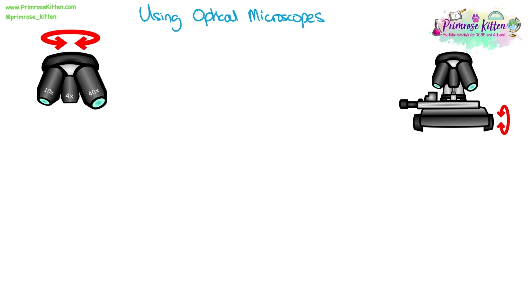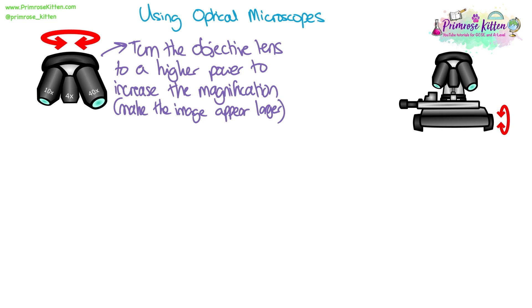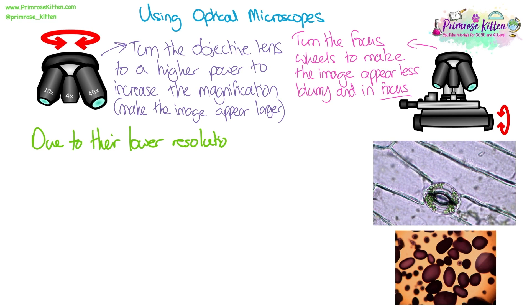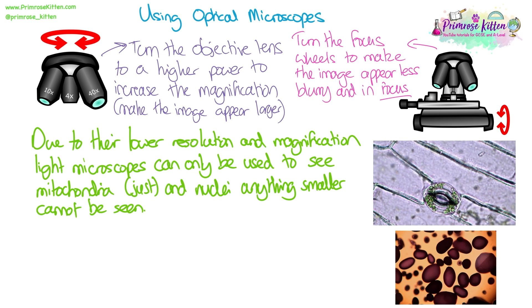When using optical microscopes, we need to make sure we're using the correct language. The way we increase the magnification is to turn the objective lens to a higher power — to make the image we see through the microscope appear larger. The focus wheels are used to make the image appear less blurry, to bring it into focus. Due to their lower resolution and magnification, light microscopes can only show certain organelles. We're really only able to see mitochondria just about, and nuclei — anything smaller cannot be seen, so no ribosomes and none of the other sub-cellular structures.